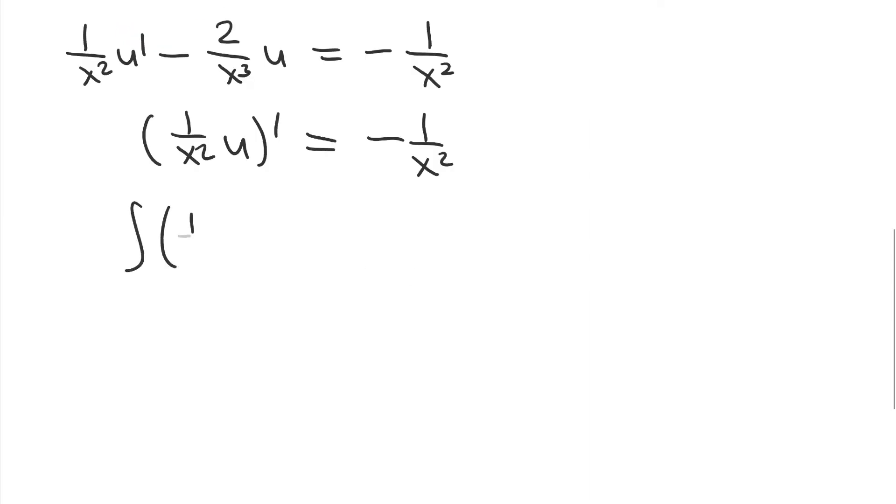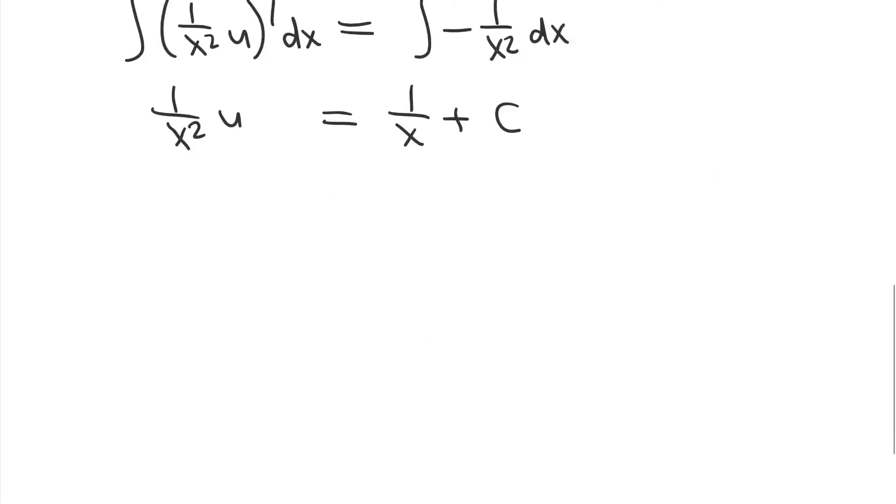Now we integrate both sides with respect to x. The left-hand side just becomes the inside part. The right-hand side becomes 1 over x plus an arbitrary constant. And then I'm solving for u. So I get u equals x plus cx squared.